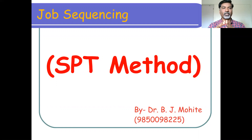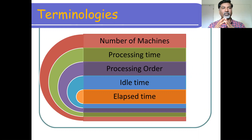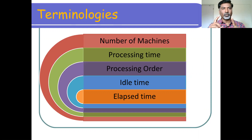SPT is nothing but the shortest processing time method. Before starting the example, we will see the basic terminologies used in job sequencing. The first terminology is number of machines — that is, the number of servers who are serving or processing the jobs.